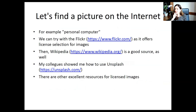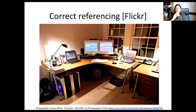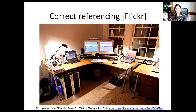For a practical example, let's find a picture on the internet. As an electrical engineer, my first choice is a 'personal computer.' I use three sources all the time for my presentations: Flickr, Wikipedia, and Unsplash — but there are also excellent resources for licensed images on the internet. If you go to Flickr and search 'personal computers,' there's a special filter in search where you can say 'show only pictures with CC licenses,' so you know you're searching licensed work.